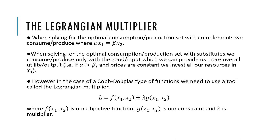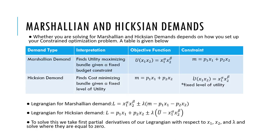The Lagrangian multiplier is defined as L equals f(X1, X2) plus or minus λ·g(X1, X2), where f(X1, X2) is our objective function, g(X1, X2) is our constraint, and λ is our multiplier. In intermediate micro we also have to solve for Marshallian and Hicksian demands.